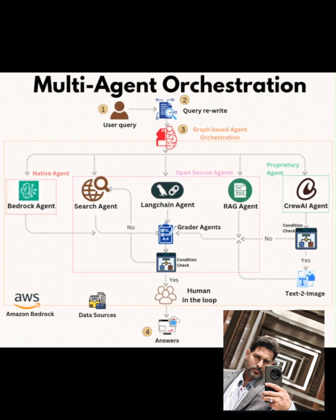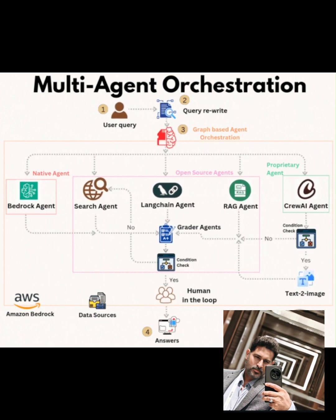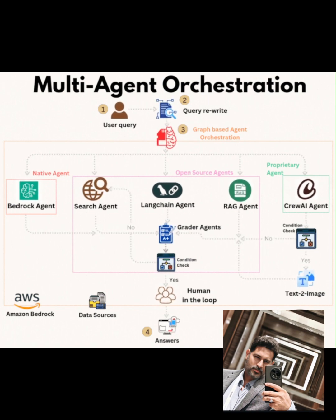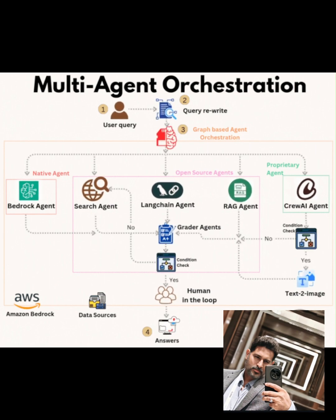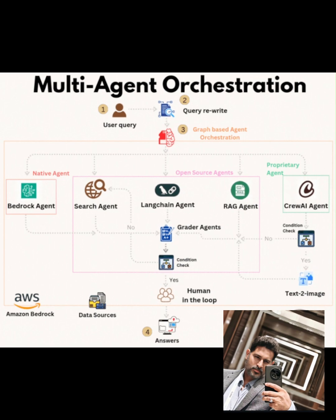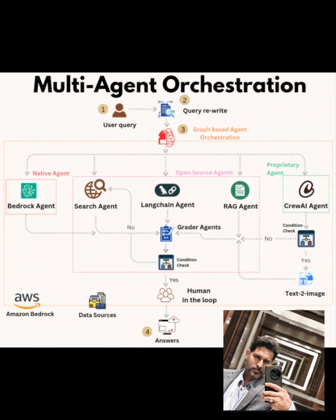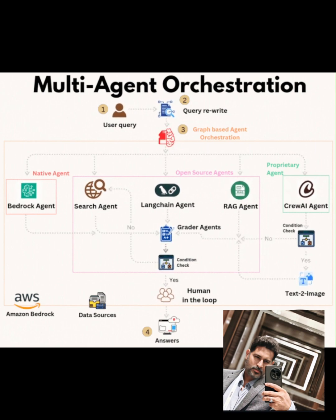A grader agent oversees quality control, performing a condition check on the draft response. It might use a scoring mechanism, like BLEU or Rouge Metrics, to evaluate the response's relevance and coherence. If the response fails the check, it's routed to a human-in-the-loop, or HITL, process, where a human reviewer provides feedback or corrections. If a visual output is needed, a text-to-image agent, potentially using a model like Stable Diffusion, might generate a diagram or illustration. If the response passes the condition check, it moves to the final step.